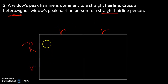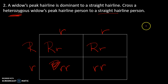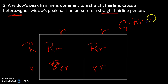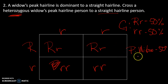So we'll cross heterozygous with homozygous recessive and fill out the Punnett square. If we do the cross, our genotypic ratios are: 50% of the time heterozygous dominant and 50% of the time homozygous recessive. Phenotypically, that means we're going to see a widow's peak 50% of the time and a straight hairline the other 50% of the time.